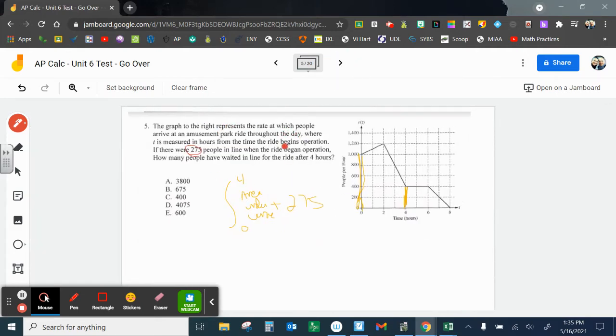Number 5, graph to the right represents the rate at which people arrive at an amusement park ride throughout the day, where T is measured in hours from the time the ride begins operation. If there were 275 people in line when the ride begins operation, how many people have waited in line after 4 hours. So I need to find the area under the curve from 0 to 4. And then that's going to give me how many people went through, because that's the rate at which people arrive. This is just going to be the total amount of people. And then they started with 275, so I'm just going to add that to whatever value I get.